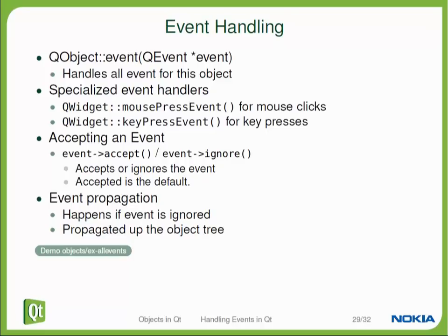This is useful, for example, if you have key presses that your widget cannot process, but your parent container widget could potentially process them. If you ignore them, they will propagate up to the parent widget.